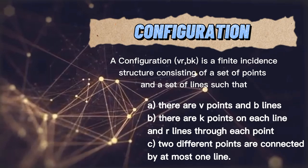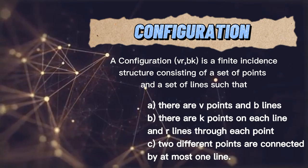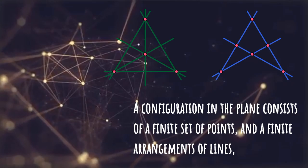(a) there are V points and B lines, (b) there are K points on each line and R lines through each point, and (c) two different points are connected by at most one line. A configuration in the plane consists of a finite set of points and a finite arrangement of lines such that